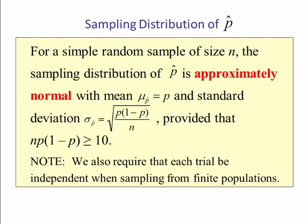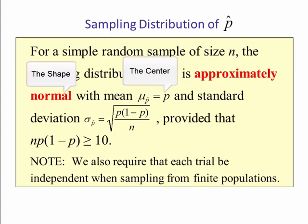So the sampling distribution of p-hat. For a simple random sample of size n, the sampling distribution of p-hat is approximately normal with mean mu of p-hat, so this is the average of all the p-hats that will equal the population proportion. And the standard deviation is given by the standard error of p-hat, which is the square root of p times one minus p divided by n.